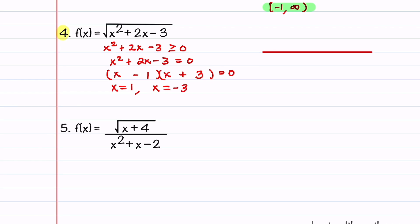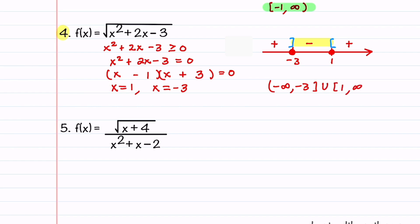We draw a number line and place minus three and one on it. These values are included in the domain because that's where the function equals zero, which is fine. We then check where the quadratic x squared plus two x minus three is positive: plugging in minus four gives a positive value, plugging in zero gives a negative value, and plugging in two gives a positive value. So we exclude the region between minus three and one, giving us the domain: minus infinity to minus three, union one to infinity, with both minus three and one included.